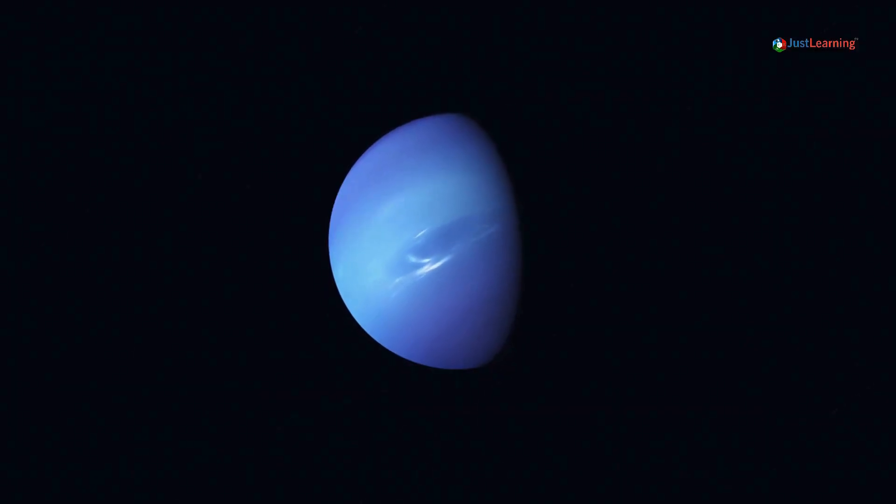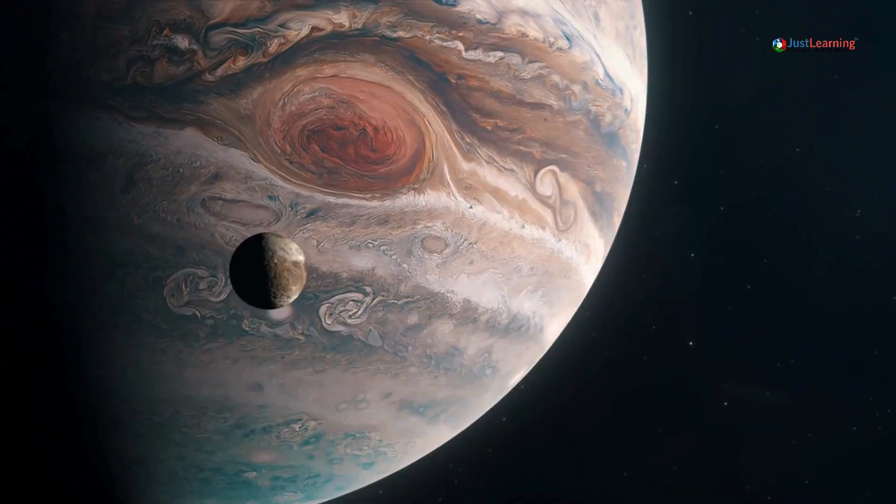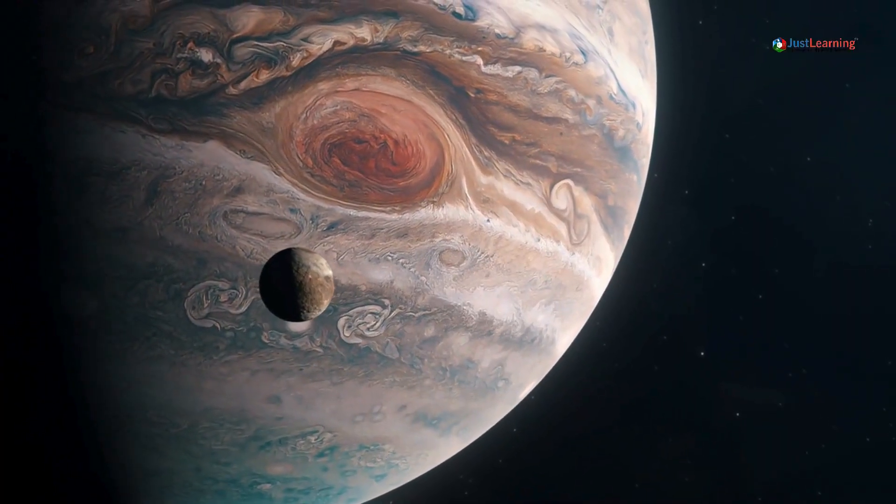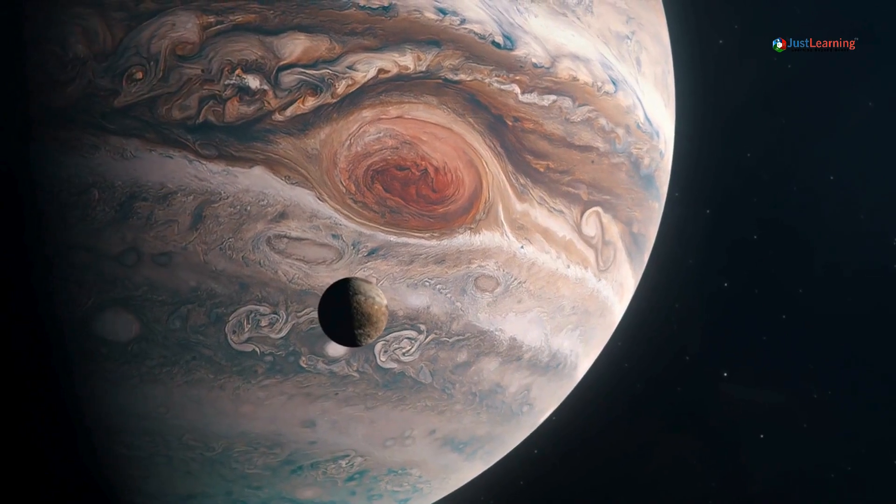Moving on to the giant planets, things get exciting. Jupiter, the first gas giant, has 95 moons. Four major ones are Callisto, Europa, Io, and Ganymede, the largest moon in the solar system.